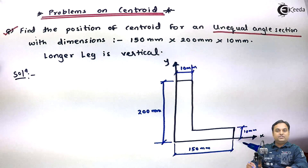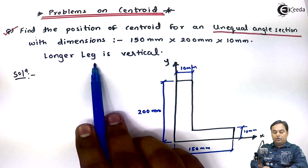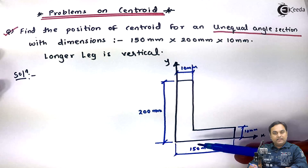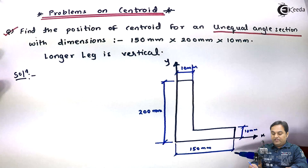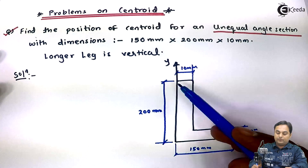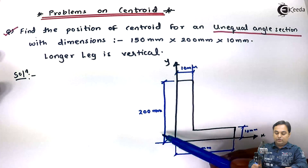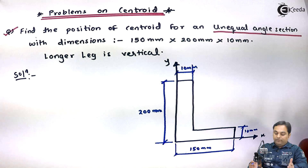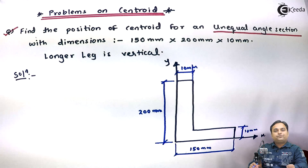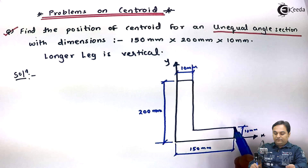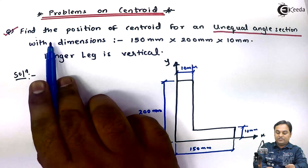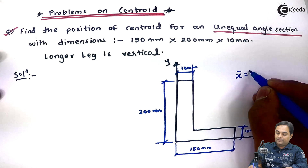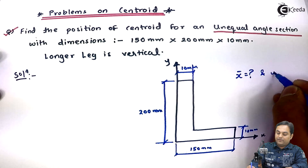This is the angle section given. They are saying the longer leg is vertical. For this angle section, we have a 150 mm leg and a 200 mm leg. The 200 mm is the vertical leg because it is the longer leg, so we keep it as vertical. For this unequal angle section, we have to locate the centroid — that is, calculate x̄ and ȳ.